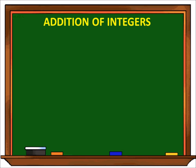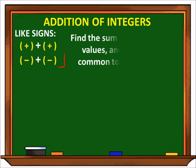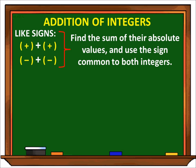Paano nga ba mag-add ng integers? Halimbawa ay like sign integers, or magkaparehas ng sign ng integers. For example, positive plus positive or negative plus negative. The first rule is: find the sum of their absolute values and use the sign common to both integers. Ibig sabihin, kukunin lang natin yung sum ng kanilang absolute values at kukopihin lang natin yung sign na common doon sa dalawang integers.